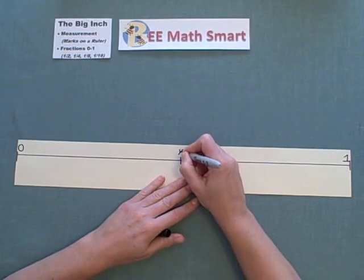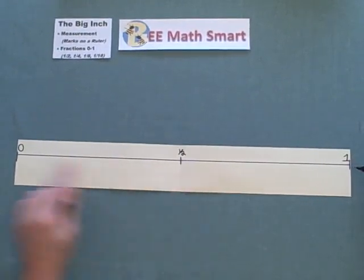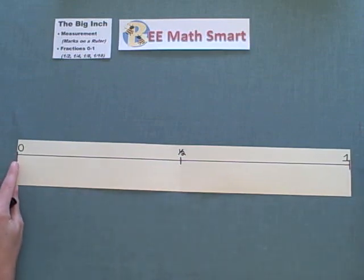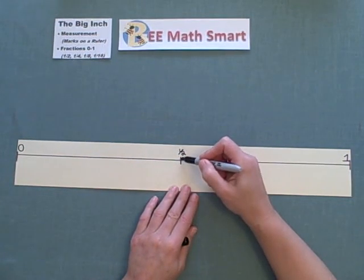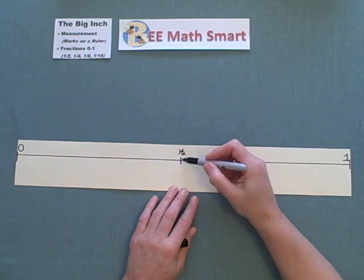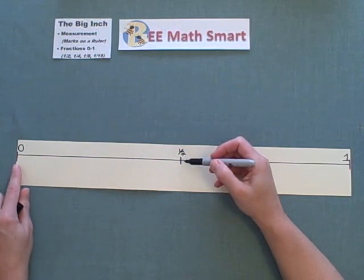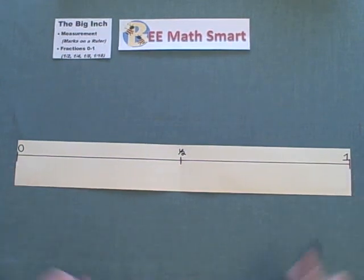Now, on your ruler, if you have one you can take a look at, you're going to notice that the lines for numbers like zero, one, two, three, four, etc., are a little longer. They're representing the whole numbers. The lines for the fractions get smaller as the fraction gets smaller. So one half is going to be slightly smaller than the zero and the one mark on the ruler.